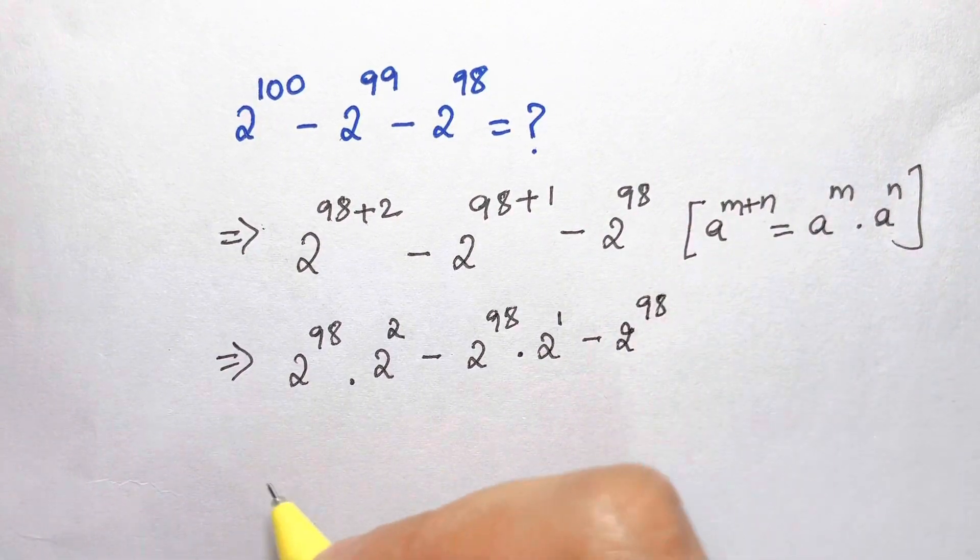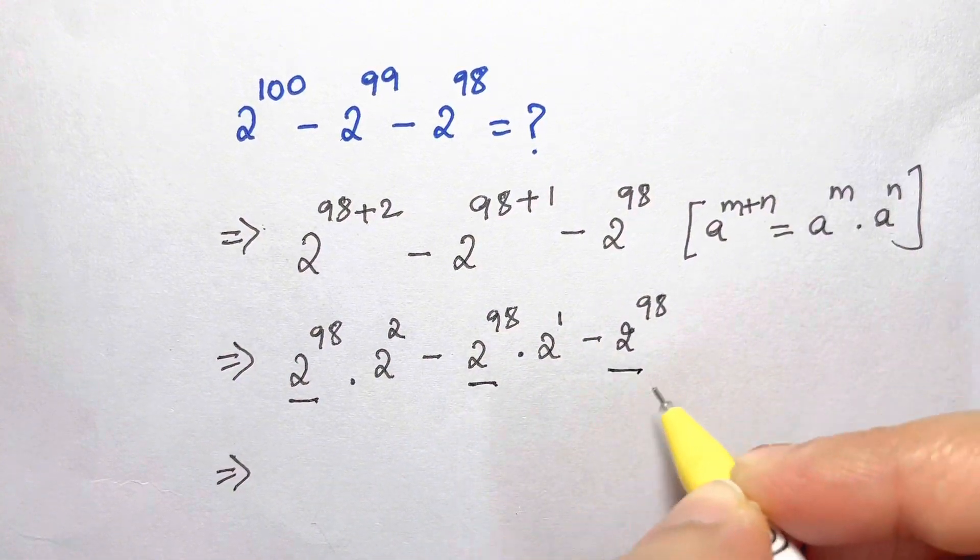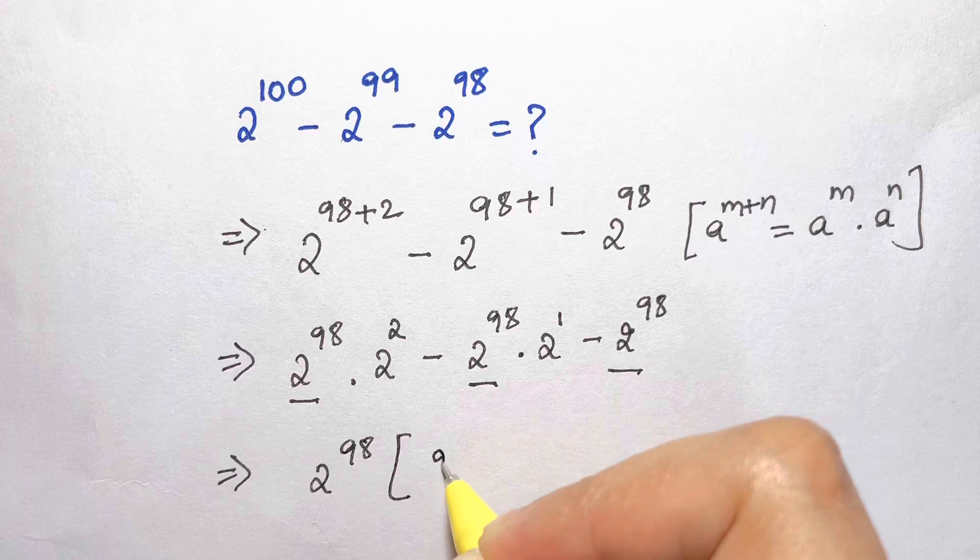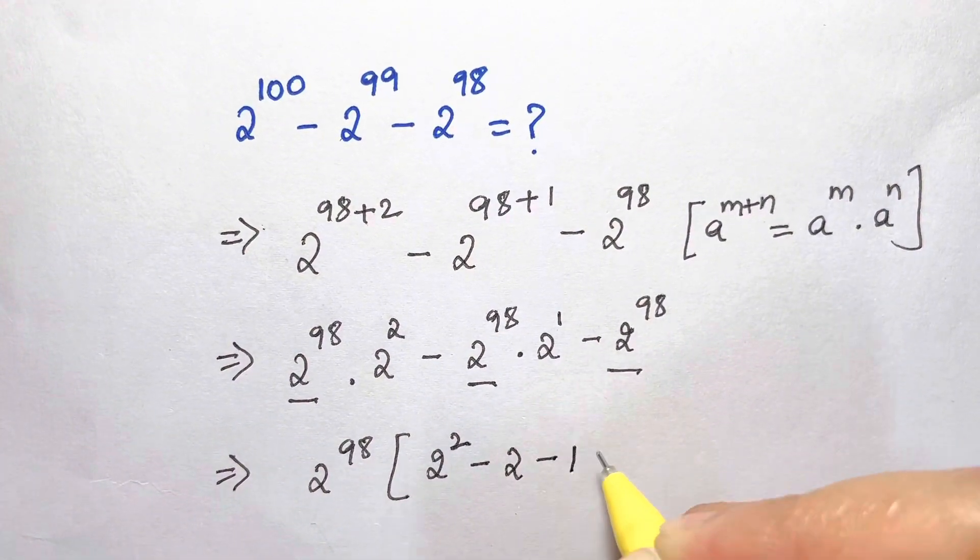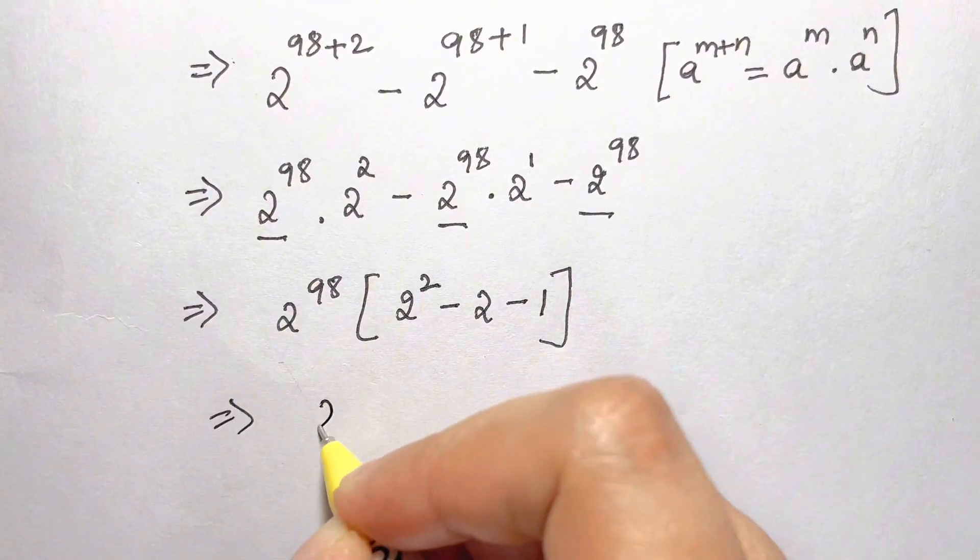And now we can take out 2 to the power of 98 common, so that will be 2 to the power of 98 times 2 squared minus 2 minus 1. Now that will give you 2 to the power of 98 times 4 minus 2 minus 1.